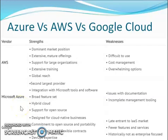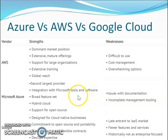Now we have come to a slide comparing why we should choose Azure and why not AWS or Google Cloud. As you can see in this slide, we have divided AWS, Microsoft Azure, and Google into three different sections with all their strengths and weaknesses. By comparing them, we can see that Microsoft Azure is the second largest provider. It has integration with Microsoft tools and software, provides a hybrid cloud with a broad feature set, and supports open source business. However, there are some weaknesses for Azure, which include issues with documentation and incomplete management tooling. Azure is still in progress and we can see much more features that are soon to be provided.